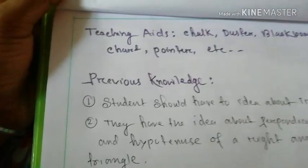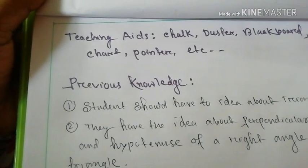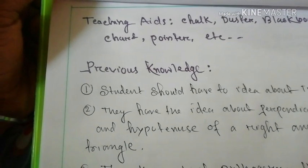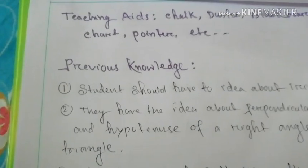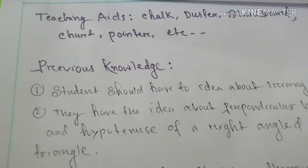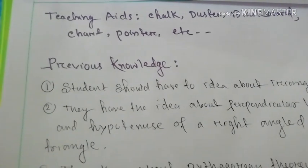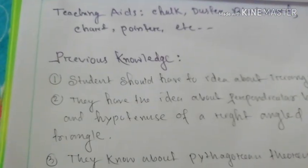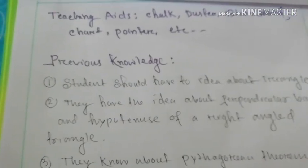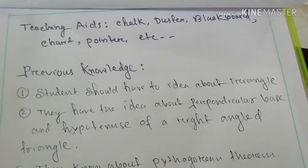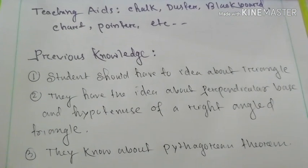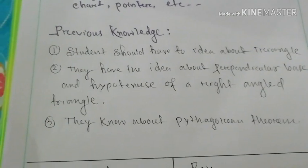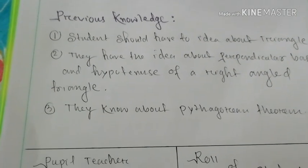After that you have to write teaching aids (TC8): show of poster, blackboard, chalk, pointer, etc. After that you have to write previous knowledge. Number one, students should have basic ideas about triangles. Number two, they have ideas about perpendicular base and hypotenuse of a right angle triangle. Number three, they know about the Pythagorean theorem.